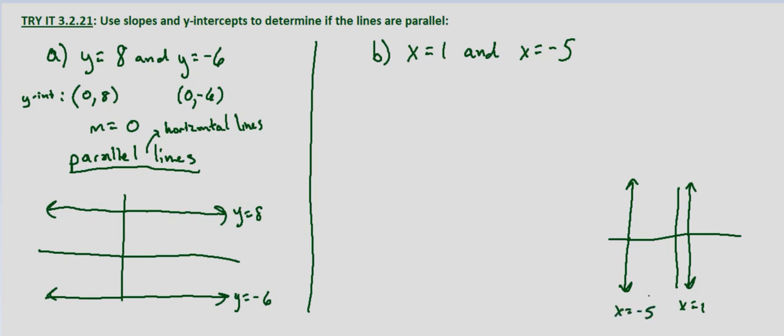So just graphing them we know they're vertical and we know that because they're vertical and they're not the same line that they are parallel. So the slope in each case is undefined.